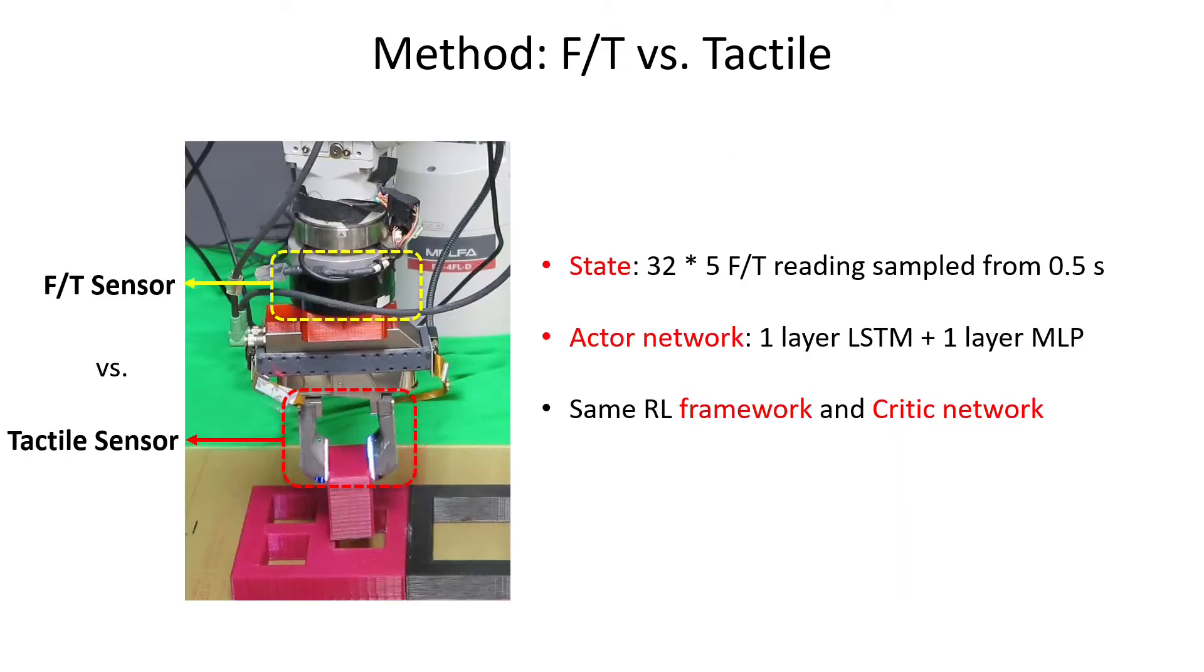As one final comparison, we train another RL policy with force-torque sensor, which is the most widely used sensor for this task. We use 32 by 5 force-torque readings sampled from 0.5 seconds as a state. The actor network is changed to a simple LSTM plus MLP model. We use still the same RL framework and the critic network.